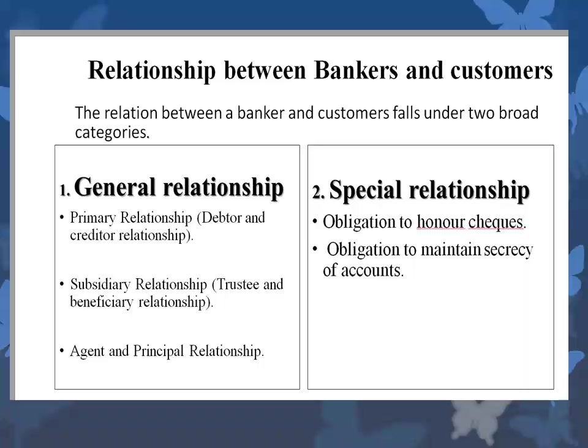Now we will see the second category, called special relationship. The first one is the obligation to honor checks. It is the duty of people to have sufficient funds in their account when they give checks to others. Similarly, whenever checks come to the bank, the bank also has an obligation to honor them. The second obligation of a bank is to maintain secrecy of accounts — they are bound not to disclose the account details of an individual to anybody else.